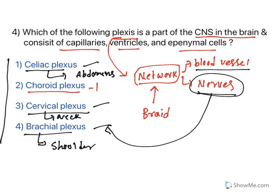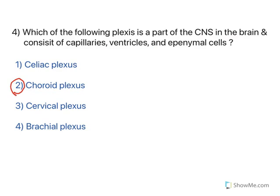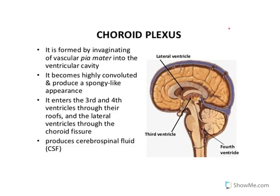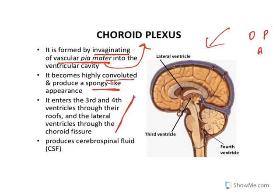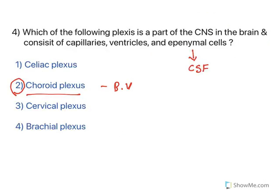The only exception is the choroid plexus, which is made up of blood vessels and is present in the CNS. It covers the ventricles and contains ependymal cells. Ependymal cells are responsible for the formation of cerebrospinal fluid. The choroid plexus is formed by invagination of the vascular pia mater — pia mater is one of the layers covering the brain, along with dura mater and arachnoid mater. It becomes highly convoluted, appears sponge-like, and produces CSF inside the ventricles.